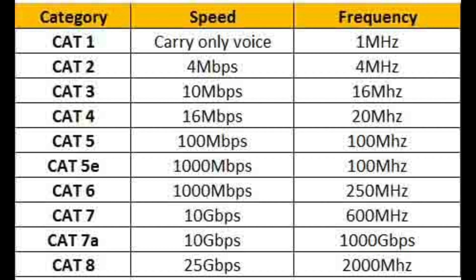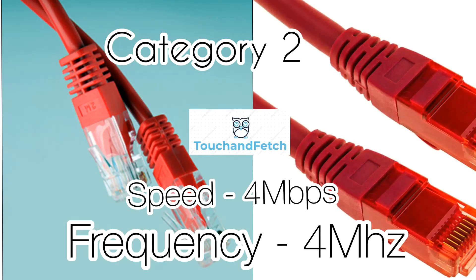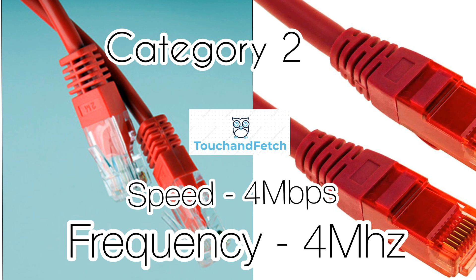The first one is Cat2. Cat2 is called Category 2 cable. Speed: 4 Mbps, frequency: 4 MHz. This cable is used for network and telephonic traffic, which is no longer used as we have moved to upgraded cables.